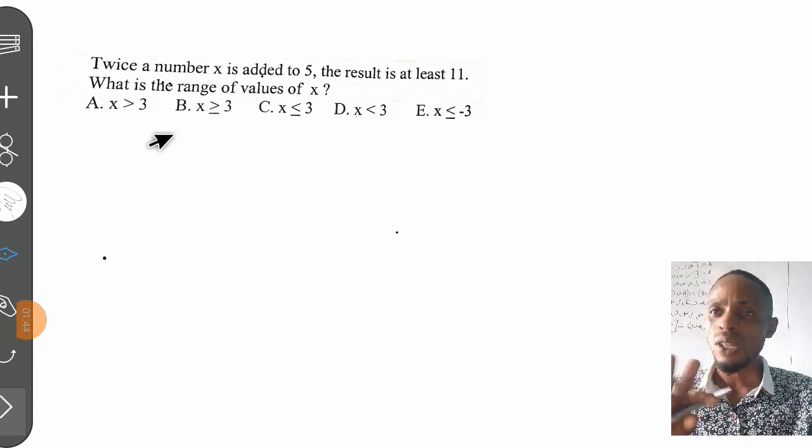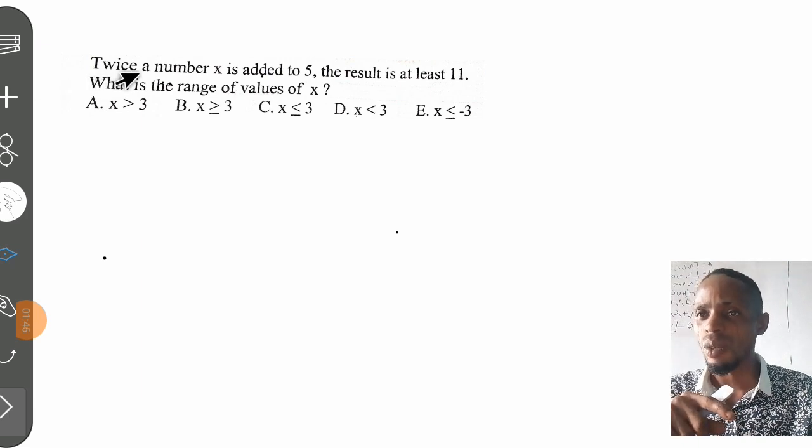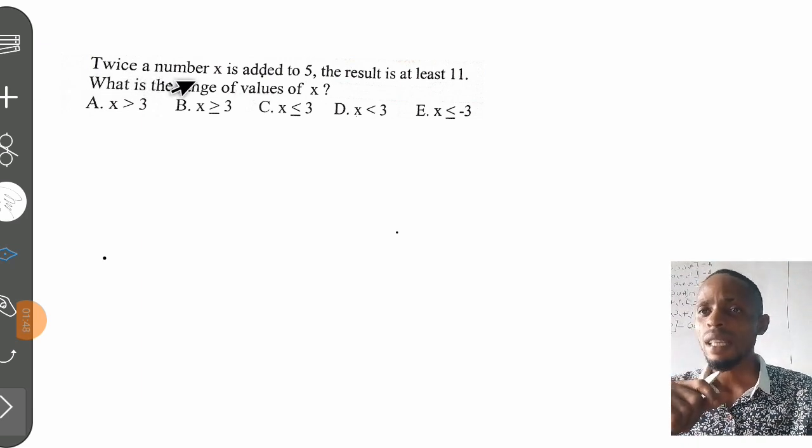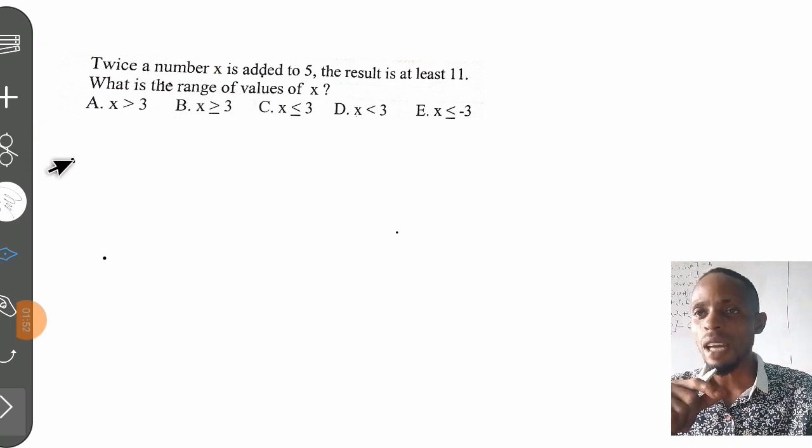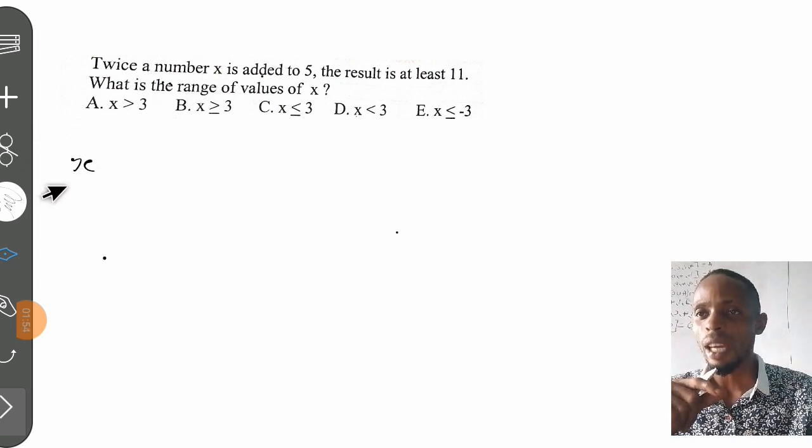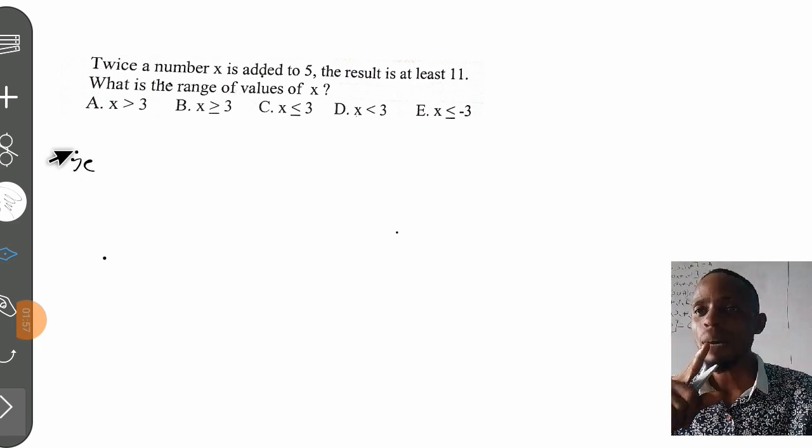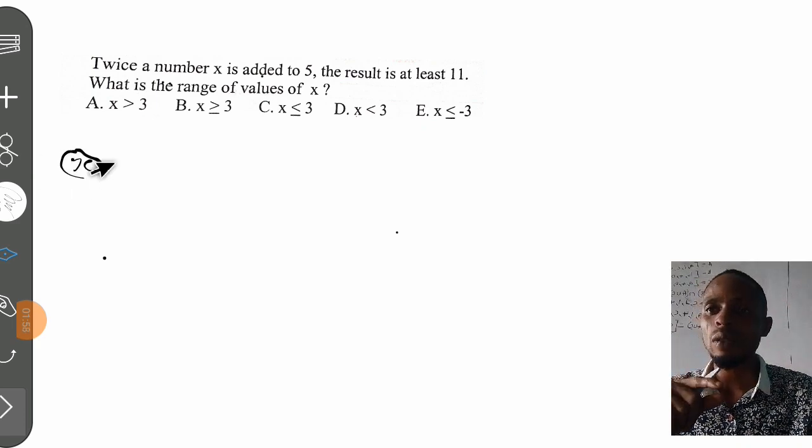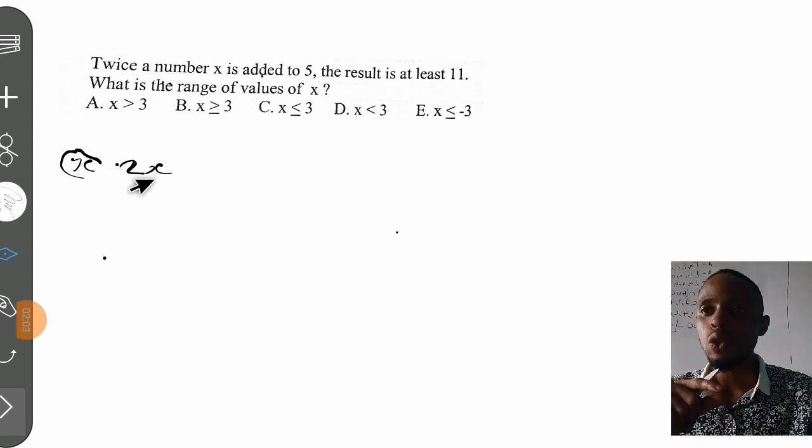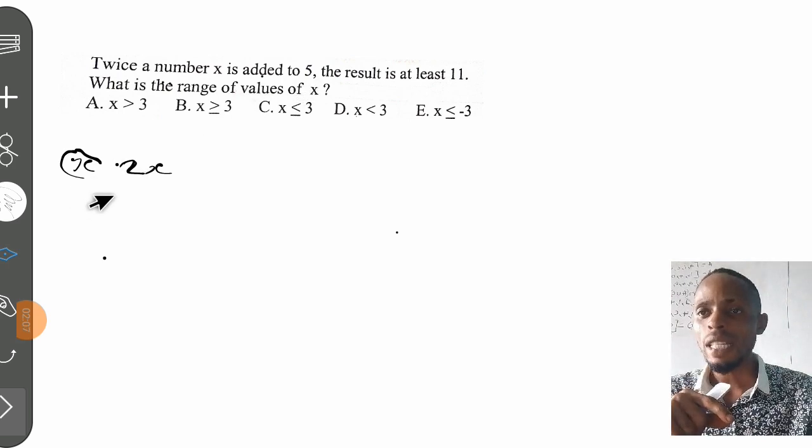Let's first interpret what we have here. Twice a number x means the number is x. Twice this number x means we have 2 times x—2x. Then it's added to 5, so we add 2x to 5.